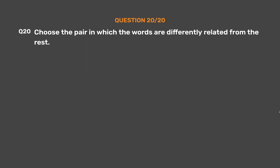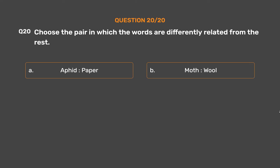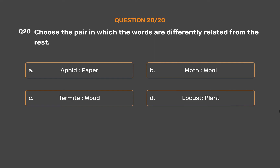Question number 20. Choose the pair in which the words are differently related from the rest. Option A: Aphid, Paper. Option B: Moth, Wool. Option C: Termite, Wood. Option D: Locust, Plant.